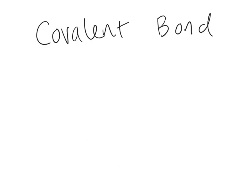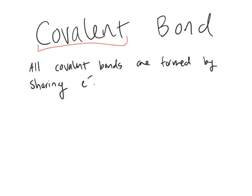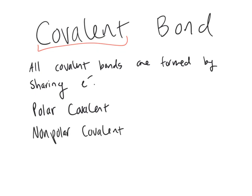To explain what a covalent bond is, we can break down the word: 'co' means together or shared, and 'valent' comes from the concept of valence electrons. What all covalent bonds have in common is that they involve the sharing of electrons. There are actually two types of covalent bonds: polar covalent and non-polar covalent. What differs between them is how they share their electrons — polar covalent bonds share electrons unequally, while non-polar covalent bonds share electrons completely equally.